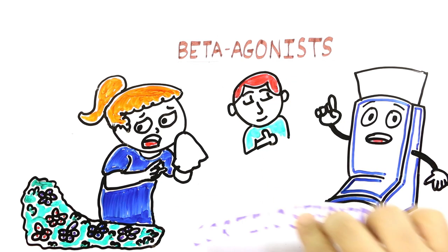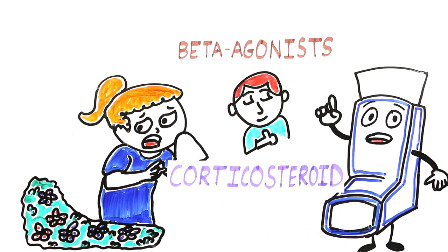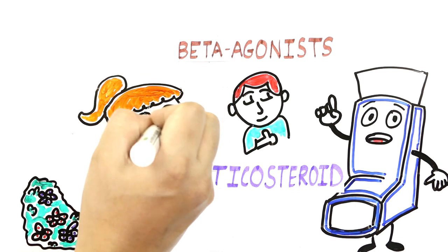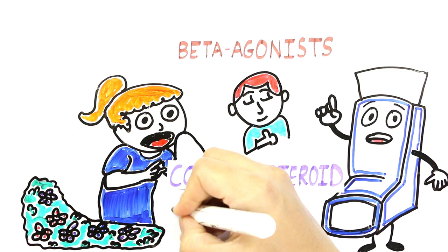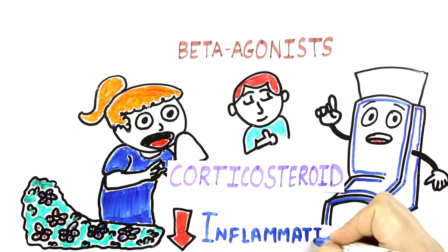The second type of inhalers contain corticosteroids, which are used to treat asthma symptoms over a long period of time. They reduce sensitivity and inflammation so that asthma can be kept under control.